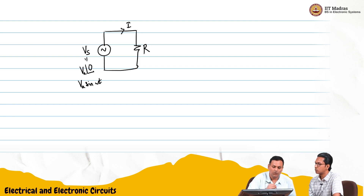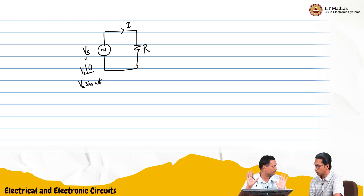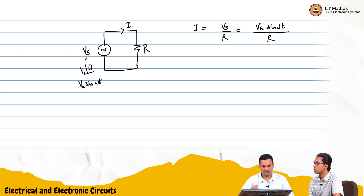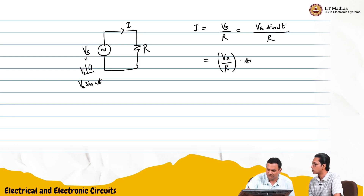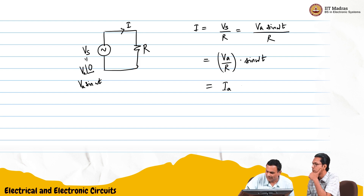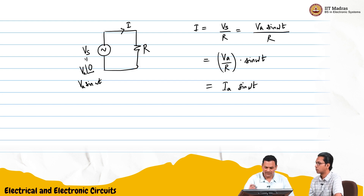I want to find the current. To find out the current, all I have to do is write Ohm's law. So I = V_s / R, which is V_a sin(ωt) / R. I am just going to write it as (V_a / R) times sin(ωt). So there is no phase change, there is no phase shift. Clearly I will just call this I_a sin(ωt). The phasor representation for this is very straightforward.